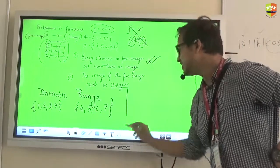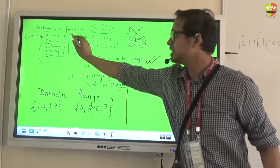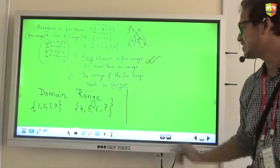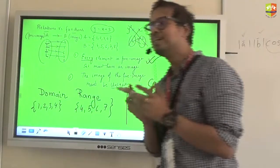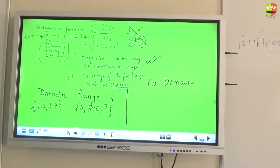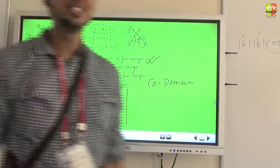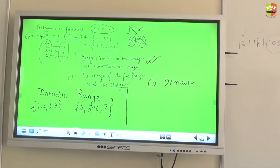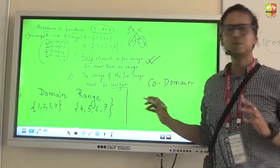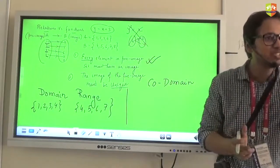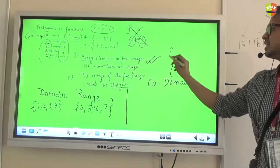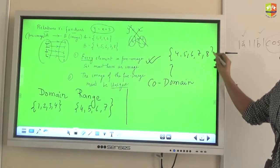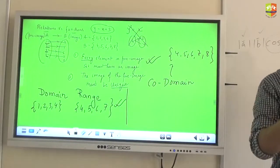In case of a function, the image set is given a different name: co-domain — just to rhyme with the word domain. Co-domain is basically your image set. We say image set in case of relations, but in case of functions the same thing is called co-domain. Co-domain includes all elements of set B — so here co-domain would be 4, 5, 6, 7, 8 — while range will be only 4, 5, 6, and 7, which actually participate in the mapping.